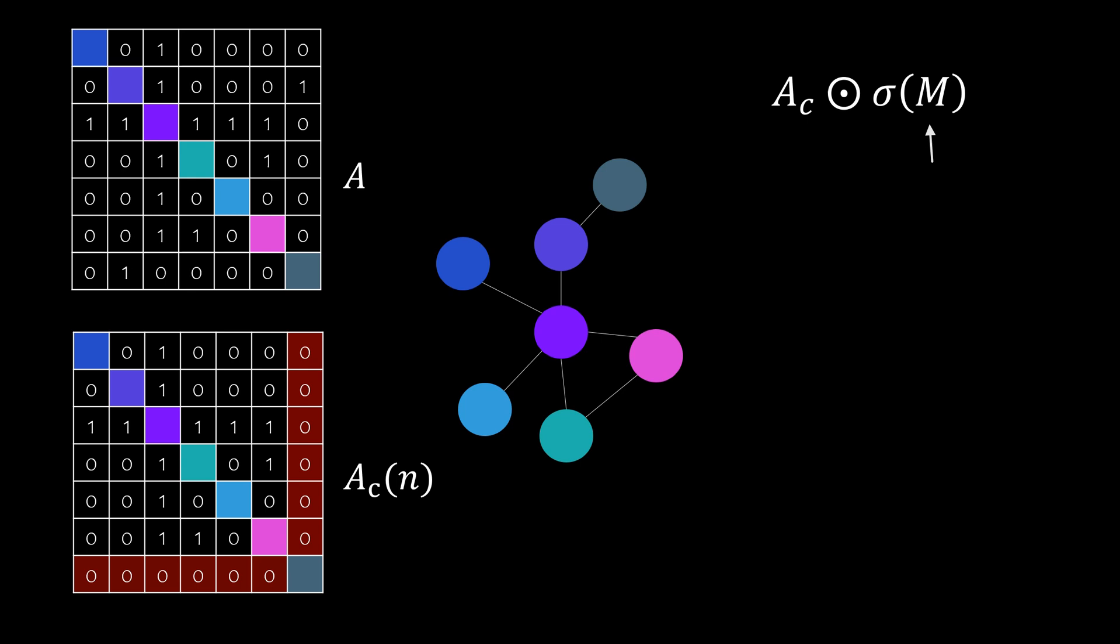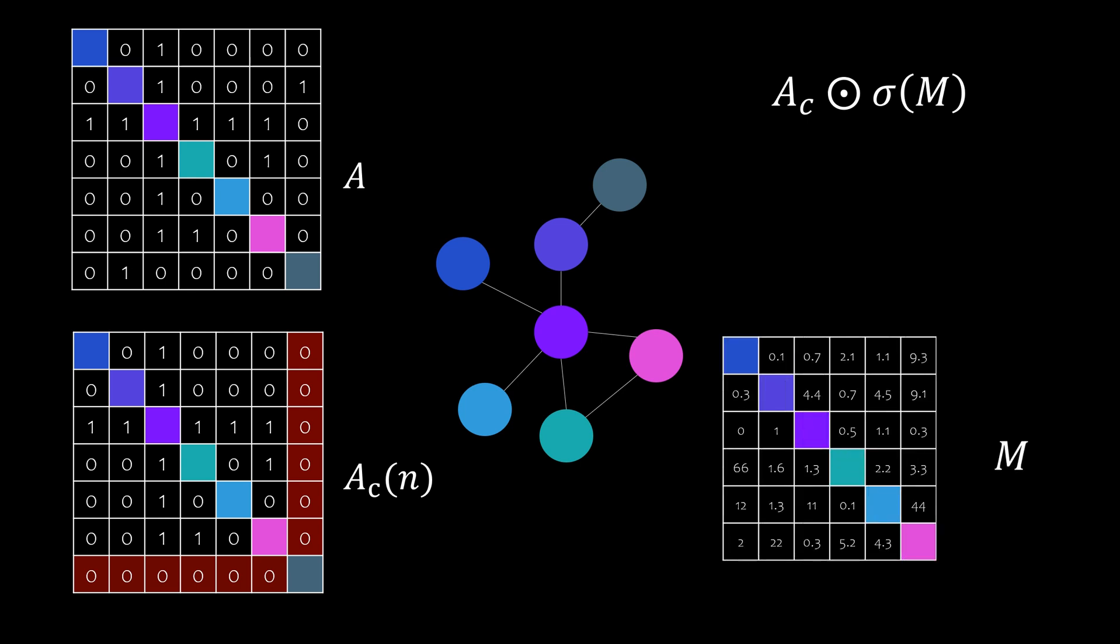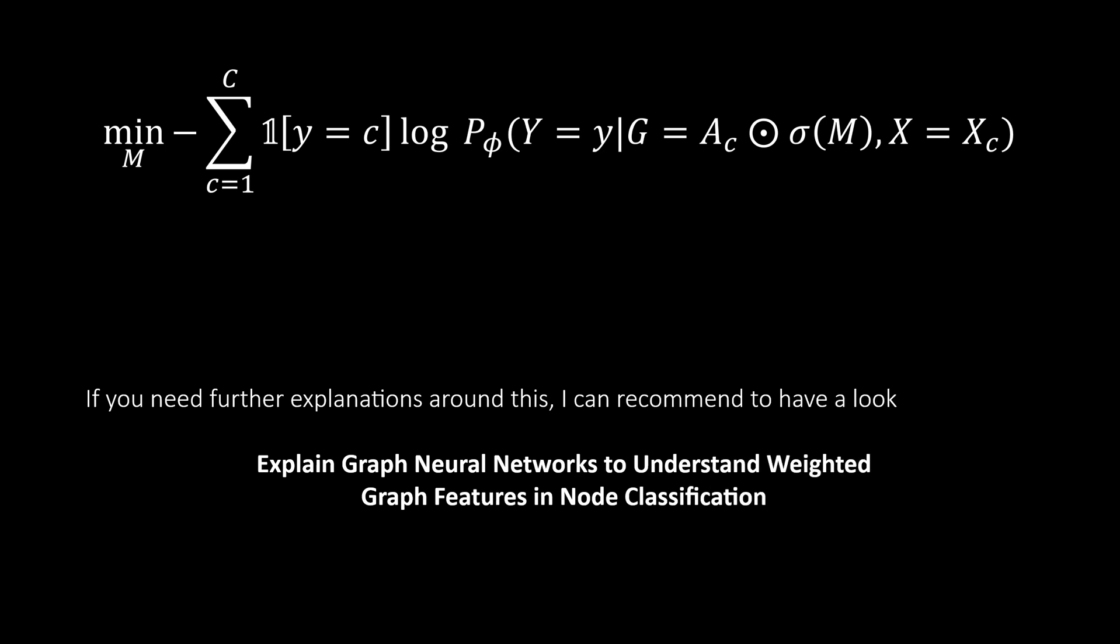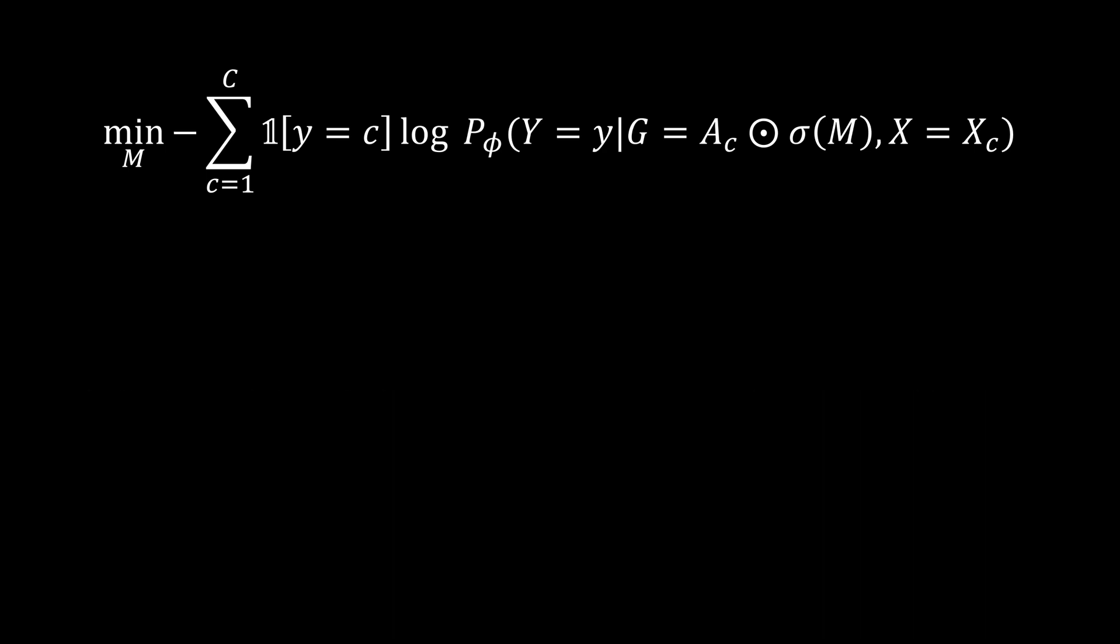Finally there is this mask M which has the same dimension as the adjacency matrices. It is a continuous matrix that defines if there exists an edge between two nodes for the computation graph. The sigmoid function is applied to convert this continuous representation into a discrete one. When AC and the sigmoid of M are multiplied now, there will be a few edges left that define the subgraph GS. So as mentioned before, this objective function is minimized using gradient descent. There are a couple of additional considerations necessary to arrive at this formula, but I will not go into more detail about it in this video. The important part is that this mask M is adjusted in such a way that the entropy is minimized.